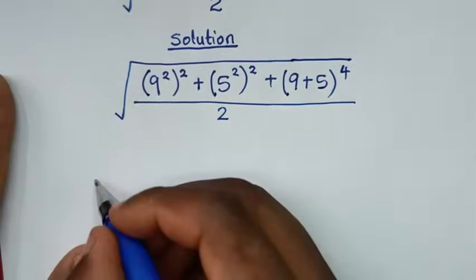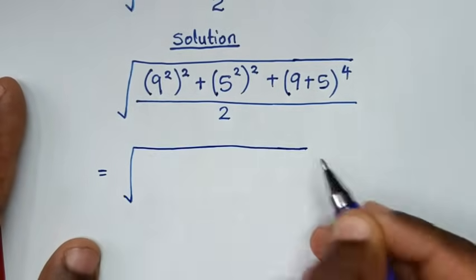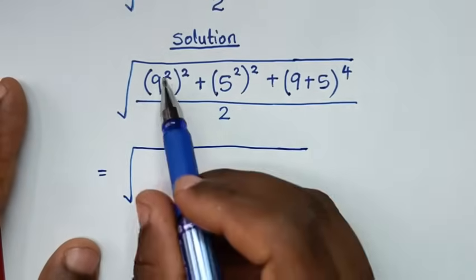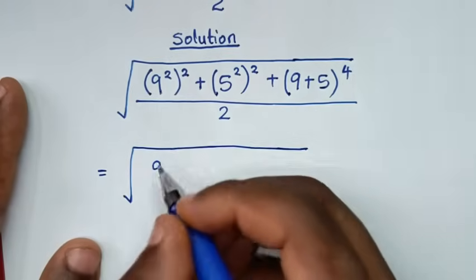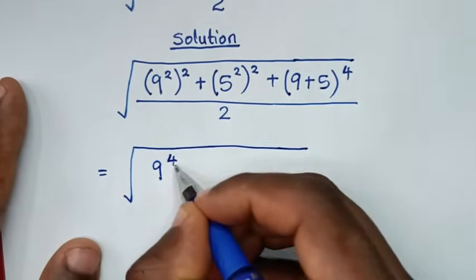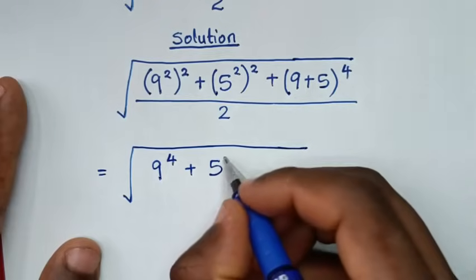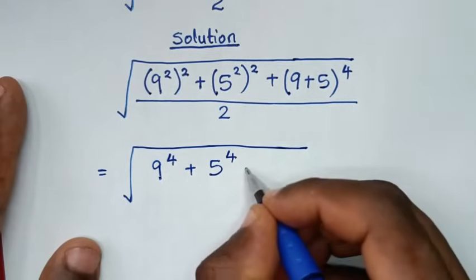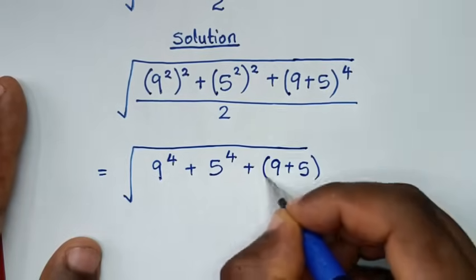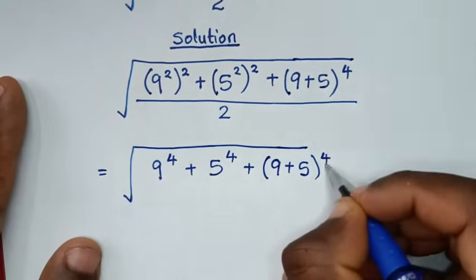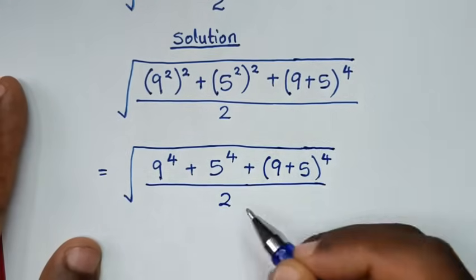Then in the next step, it will be equal to square root. Here we open the bracket, so it will be 9 to the power of 2 times 2, which is power of 4, plus 5 to the power of 2 times 2, which is power of 4, then plus (9+5) bracket to the power of 4, then over 2.